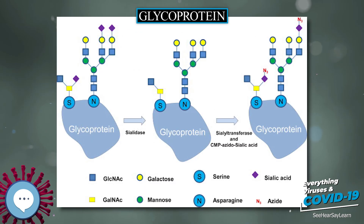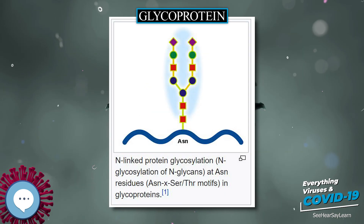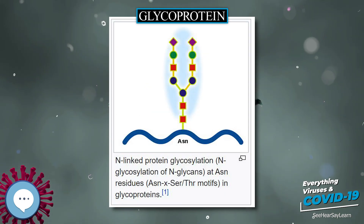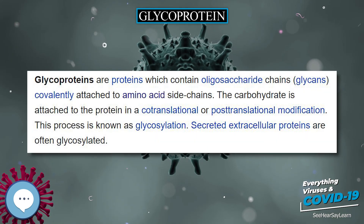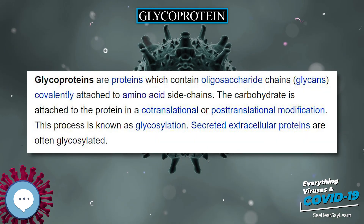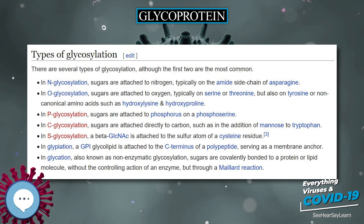In addition, as these glycans are much less variable than the underlying protein, they have emerged as promising targets for vaccine design. Hormones that are glycoproteins include several important examples. A variety of methods are used in the detection, purification, and structural analysis of glycoproteins.